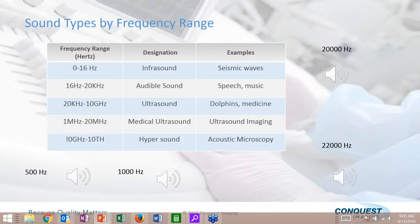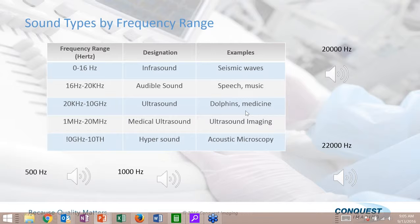These are the various sound types by frequency range. Seismic waves travel through the earth. From 16 Hz to 20 kHz is human speech and music. From 20 kHz to 10 GHz is the range used by dolphins. But what we're really interested in is 1 MHz to 20 MHz, which is diagnostic ultrasound imaging.